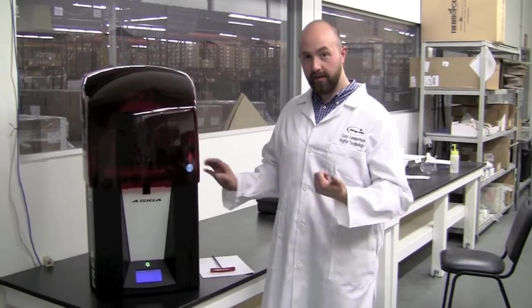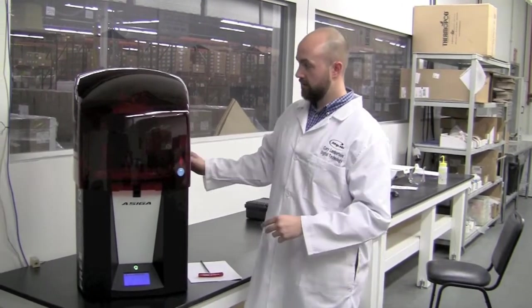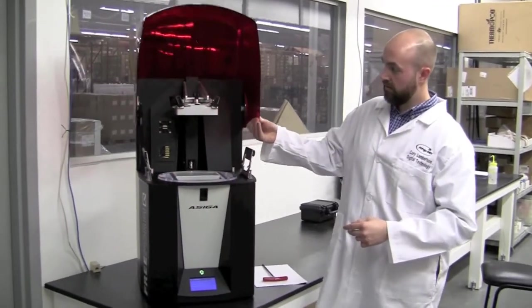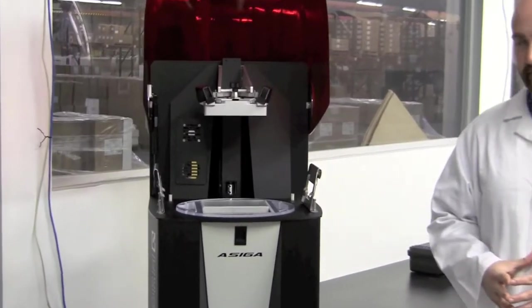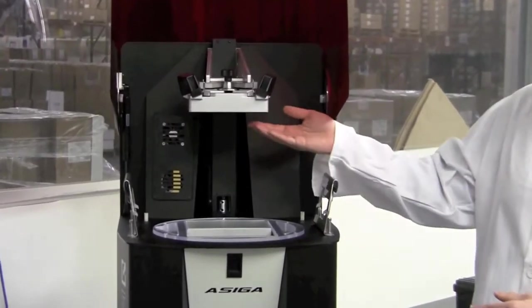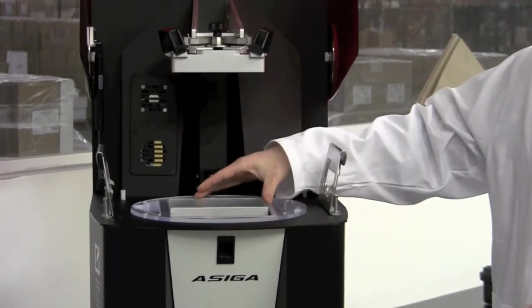You'll want to do this upon receiving your machine for the first time for initial setup and or if you have moved the machine in the laboratory or dental office. The main purpose of performing the Z-axis calibration is to create a parallel surface of the build plate to the build envelope sliding glass.